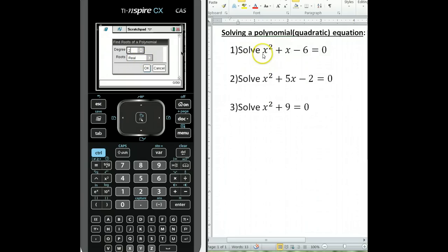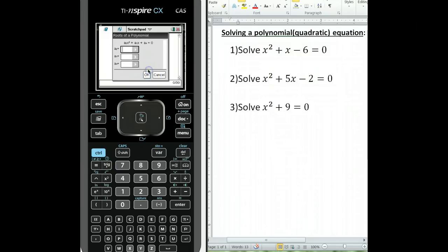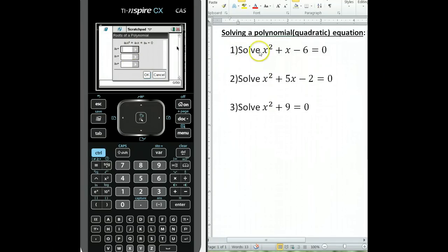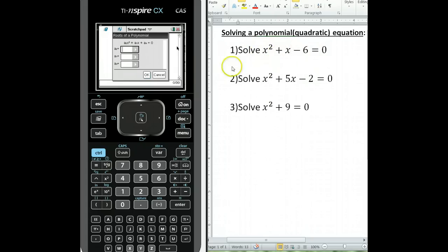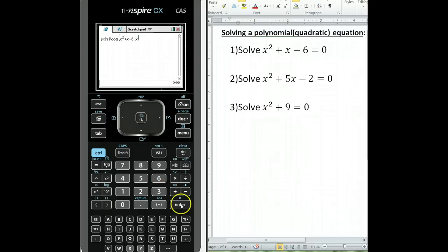So for example number 1 here, solve x squared plus x minus 6 equal to 0, the degree is 2, and I will be looking for real roots, so I'll hit OK. Now I need to enter the coefficients, which are 1, 1, and negative 6. Once you've entered them, you can click OK or hit Enter, and then hit Enter one more time.